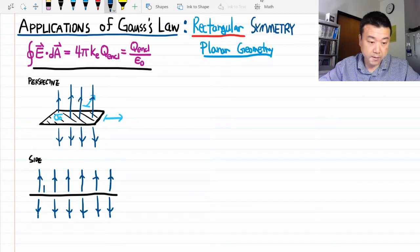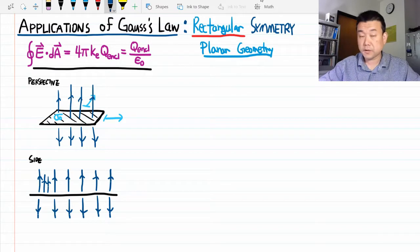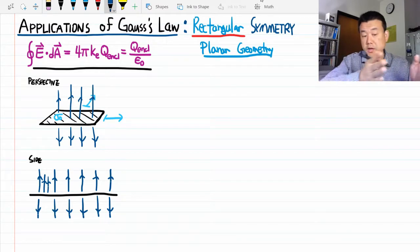we can use a symmetry argument to prove important features of these field lines. For example, we can prove that there's no concentration of field lines in one area. Because if we did,